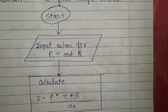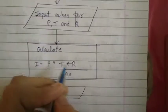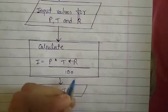The input values are P, T, and R. Then we will calculate I equals P star T star R divided by 100.